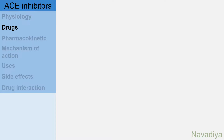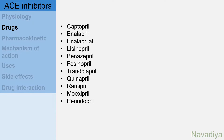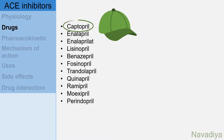Now we are good to go with ACE inhibitors. Drugs in this group are captopril, enalapril, enalaprilate, lisinopril, benazepril, fosinopril, trandolapril, quinapril, ramipril, moexipril and perindopril. Captopril is the prototype drug in this group, and other drugs mostly follow the profile of this drug.